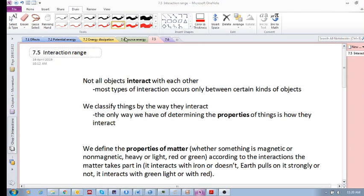Alright guys, let's have a look at 7.5 interaction range. What we see is that not all objects interact with each other in the same way. Some objects don't interact with others.